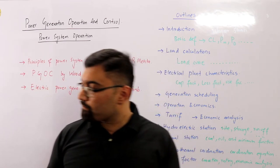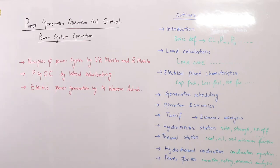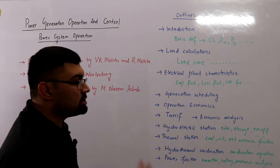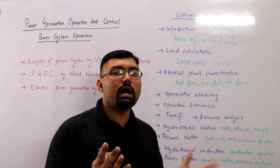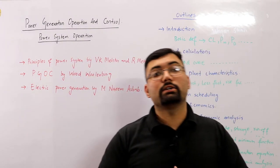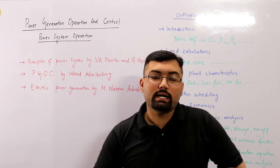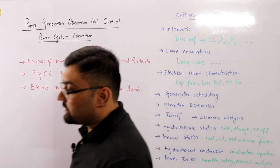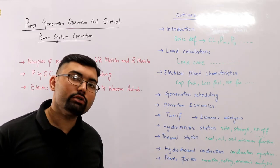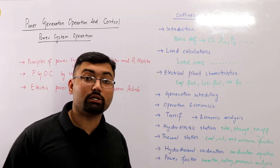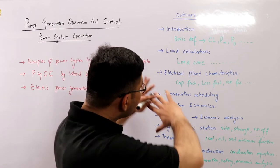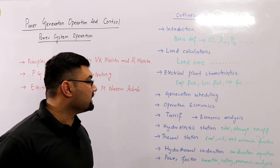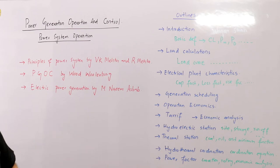That is the outline of the course. As a power system engineer, we are primarily interested in the economic point of view — the cost-to-benefit ratio, where the benefit should be greater than the cost. Keep cost-to-benefit ratio in mind for the overall course.